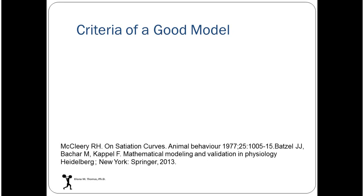Before I begin this presentation, what constitutes a good model? What do we want from a model? I've actually been thinking about this because when we look at the difference between curve fitting and a differential equation model, those two things are very different and articulating how they're different is difficult. McCleary, a biologist studying eating rates in animals, came up with four criteria that define a good model. Interestingly, these four criteria were also discussed by Batzel, Bacher, and Kappel — three mathematicians — in a book on mathematical modeling and physiology.